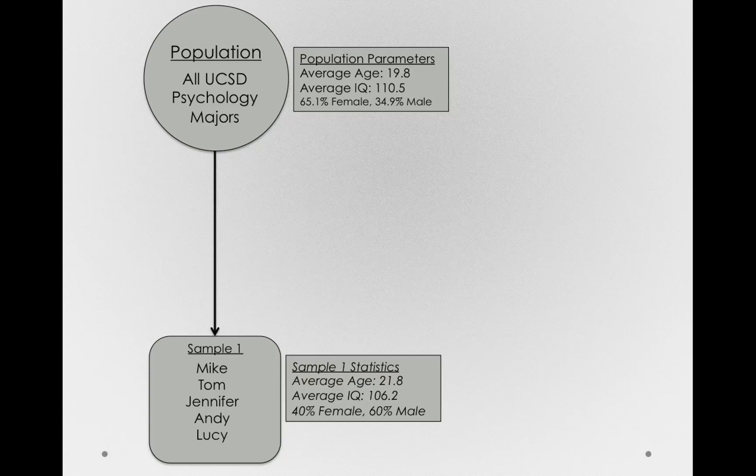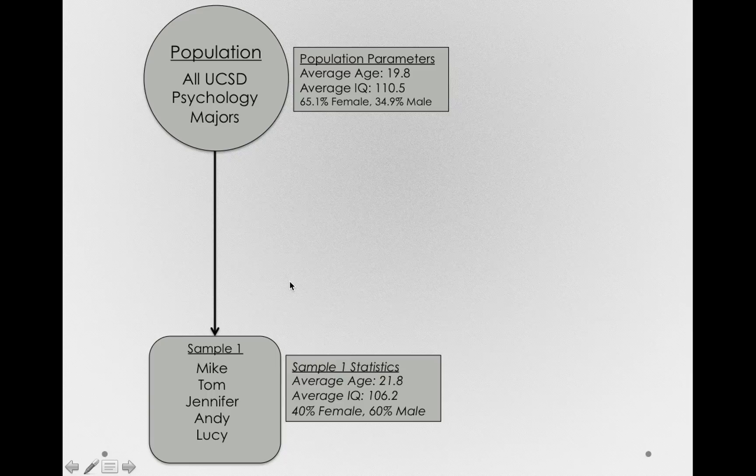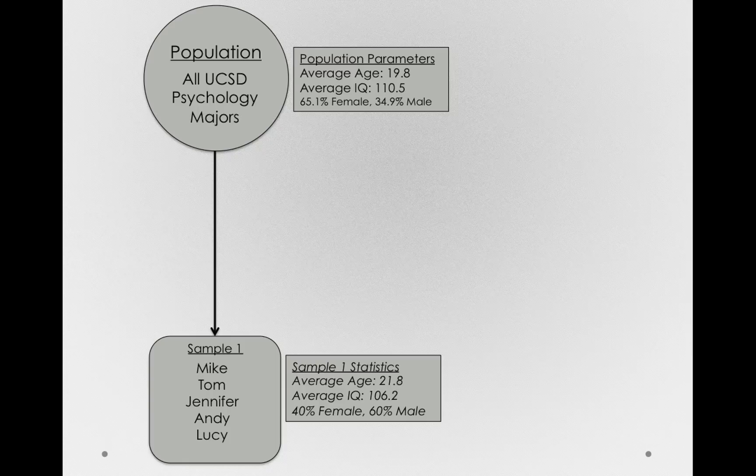And before I go on, notice that these sample statistics aren't matching the population parameters. And this should make some sense intuitively. We just have a sample of five individuals from the population, so we shouldn't have an expectation that those five individuals will perfectly represent the population.